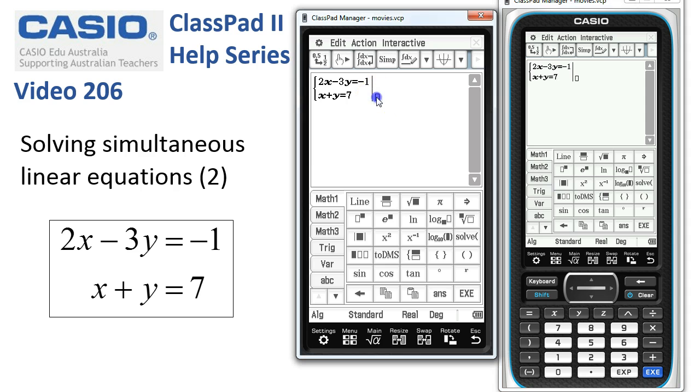In the third box, I tell ClassPad the variables I want to solve for: x, y. Now I simply tap execute. And we have our solution set: x equals 4 and y equals 3.